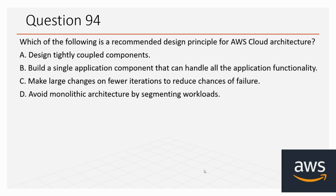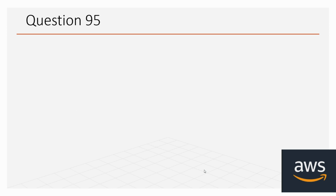Question number 94: Which of the following is a recommended design principle for AWS cloud architecture? Options: A. Design tightly coupled components. B. Build a single application component that can handle all the application functionality. C. Make large changes on fewer iterations to reduce chances of failure. D. Avoid monolithic architecture by segmenting workloads. The correct option is D, avoid monolithic architecture by segmenting workloads.